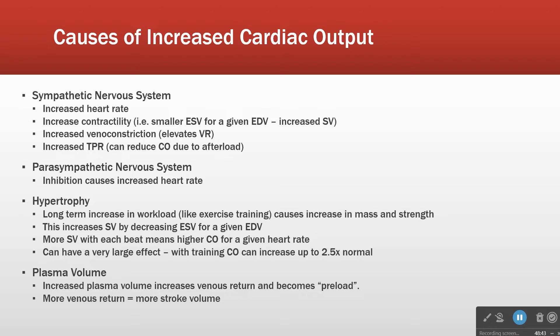If you are a cross-country runner or train for a marathon, one benefit you get is your ESV gets smaller and smaller because your heart gets better and better able to completely empty. It gets stronger and more efficient — it can pump more blood for a given amount of energy. More stroke volume per beat means higher cardiac output for a given heart rate. With aerobic training, you can increase your cardiac output by more than two and a half times normal.